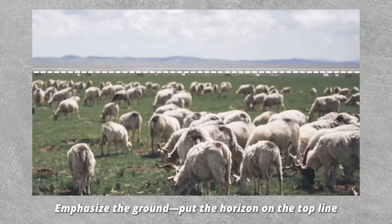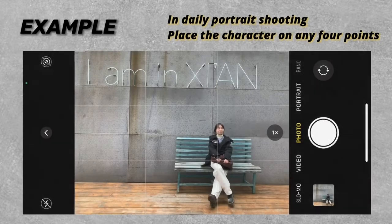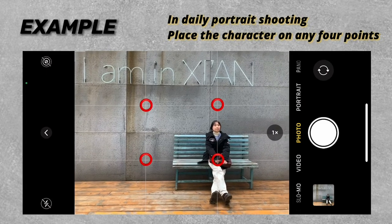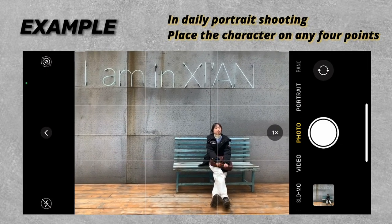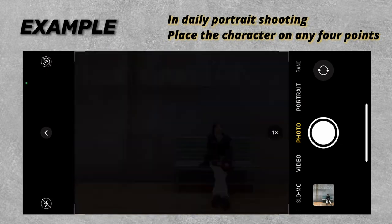If you want to emphasize the ground, you can put the horizon on the top horizontal line, and if you want to emphasize the sky, you can put it on the bottom line. In daily portrait shooting, we can choose to place the character on any of the four points to construct a harmonious and dynamic image.